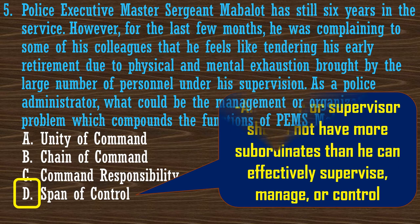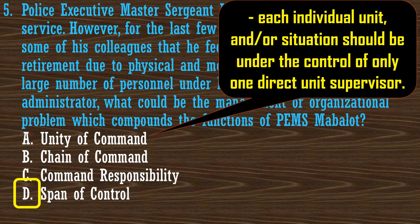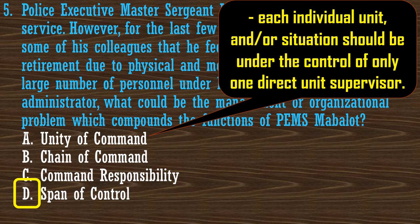Unity of command is a principle in which each individual unit or situation should be under the control of only one direct supervisor — not many leaders. Unity of command is typically achieved in a line organization where there is one leader to report to. Just like cooking: if too many people are cooking, each with different seasoning, the food will be ruined. Similarly, in an organization, if there are too many voices giving direction, the unity of command is violated.